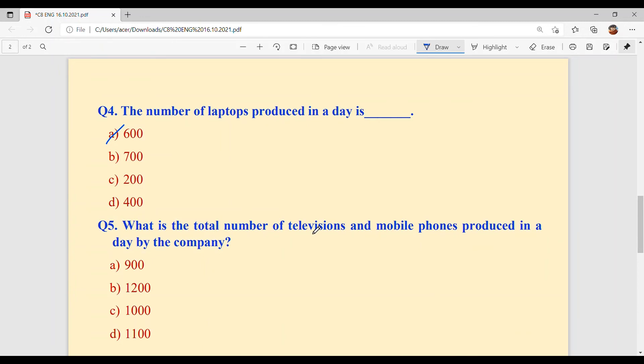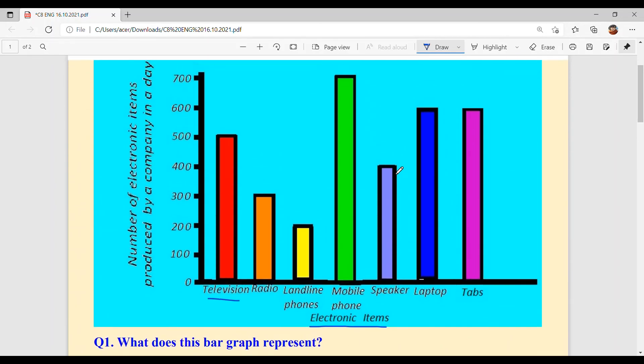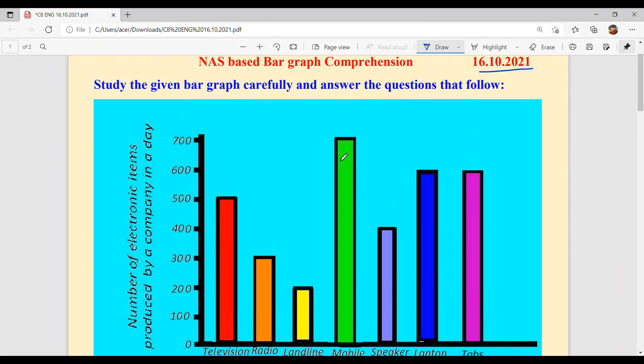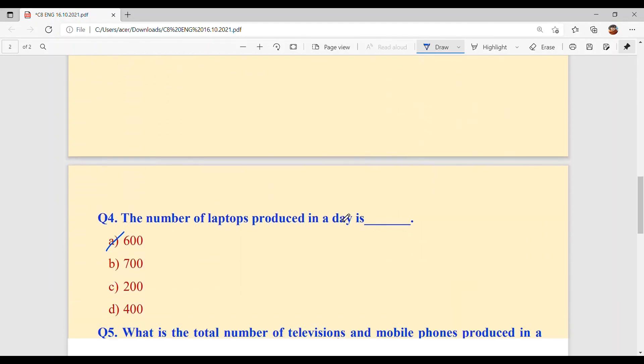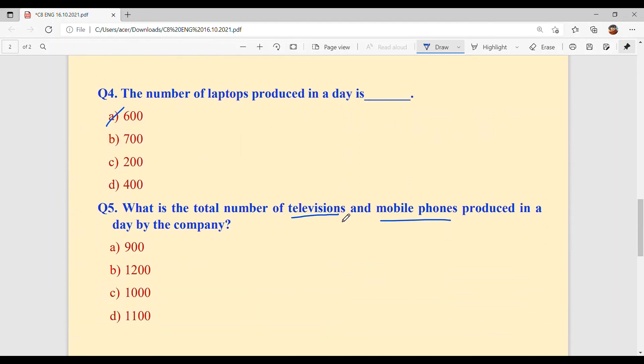And last is, what is the total number of televisions and mobile phones produced in a day by the company? Mobile phones is 700 and television is 500, 7 plus 5, 1200. Option B is your answer.